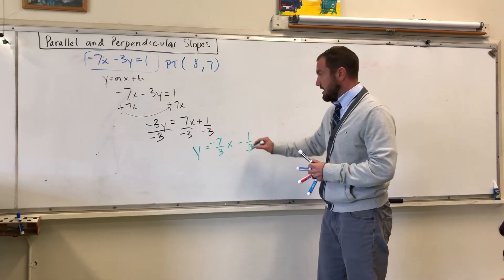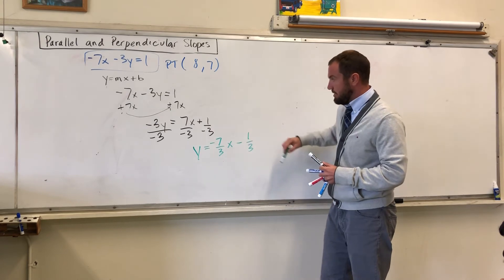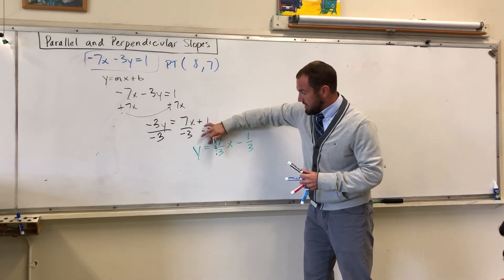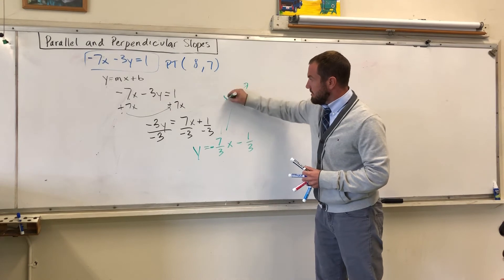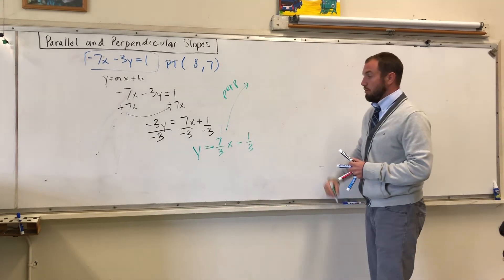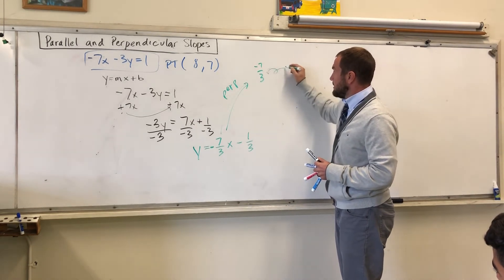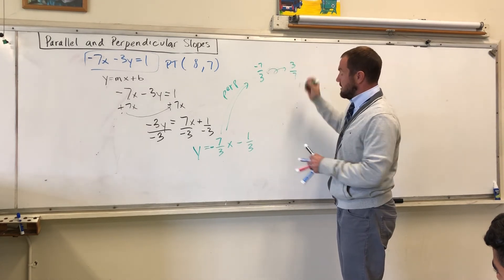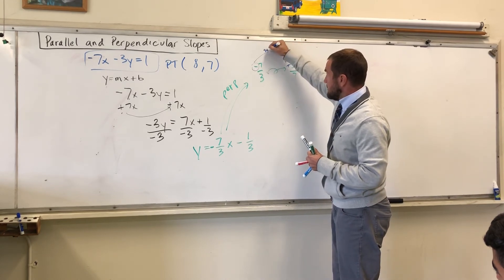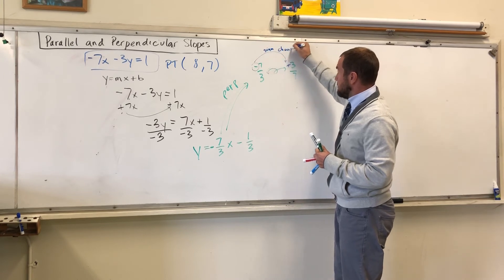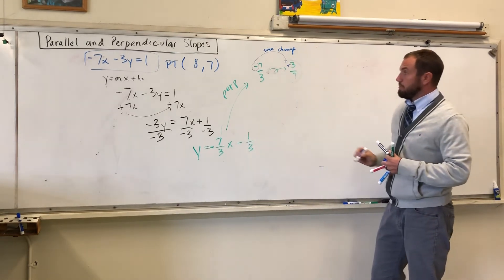Here's my y-intercept. I divided positive 1 by negative 3, making it negative. Now remember, for perpendicular, we flip the fraction — from negative 7 over 3, with a little flip arrow, to 3 over 7 — and we change the sign from negative to positive. So my perpendicular slope would be 3 over 7.